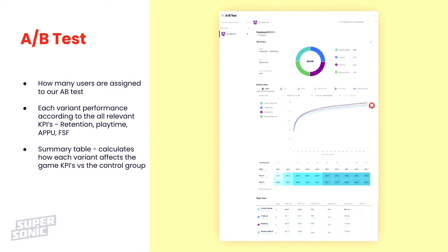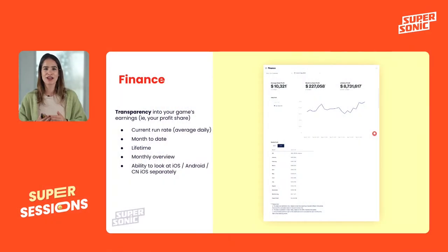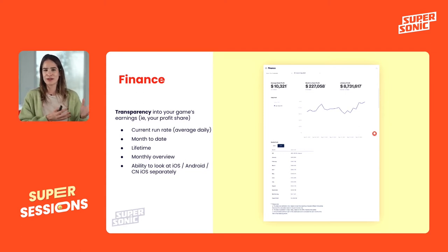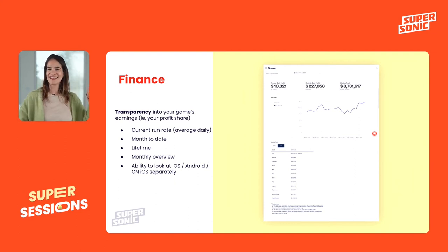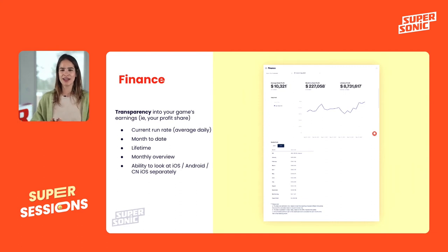Last but not least, and really the reason we're all here — the finance page. Transparency into your game earnings, your profit share, how much you're going to make — not just waiting for the invoice at the end of the month. You can see the current run rate, month to date, lifetime earnings, the monthly overview, and also break it down per OS. That's it — let's take a few minutes and then start the Q&A.